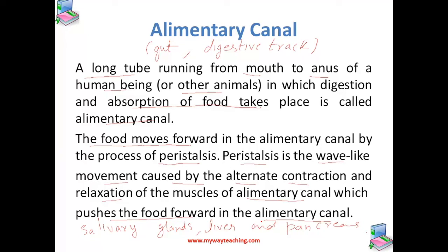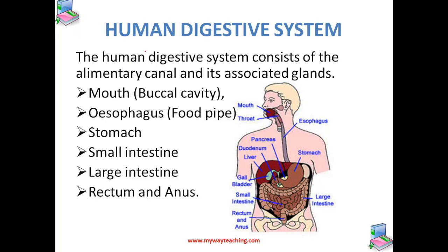The food enters the elementary canal at the mouth. As the food travels through the various parts of the elementary canal, it gradually gets digested. Looking at the picture, the mouth and the anus are connected by a system which includes our mouth, then the oesophagus, then the stomach area, the two intestines, and finally the anus. This whole system together forms the elementary canal. It also includes the salivary glands in our mouth or throat, and the pancreas and liver which secrete the digestive juices.